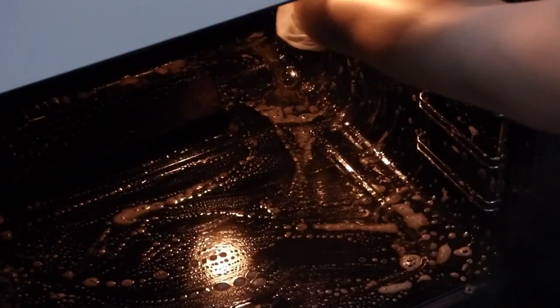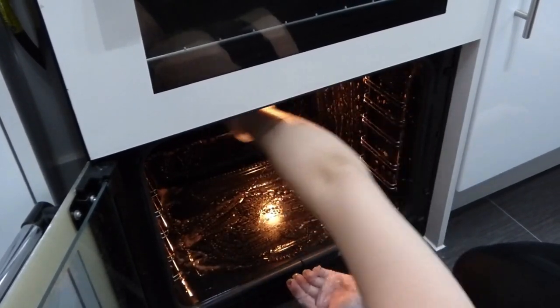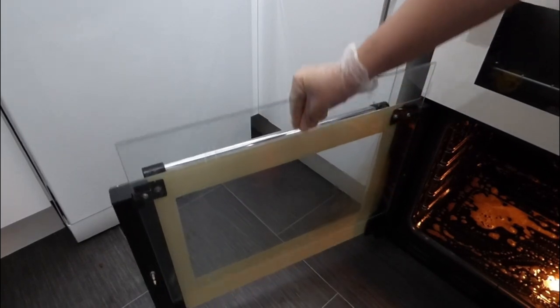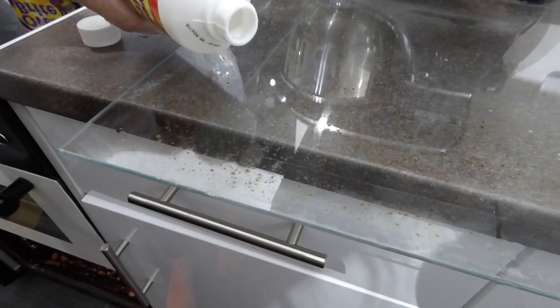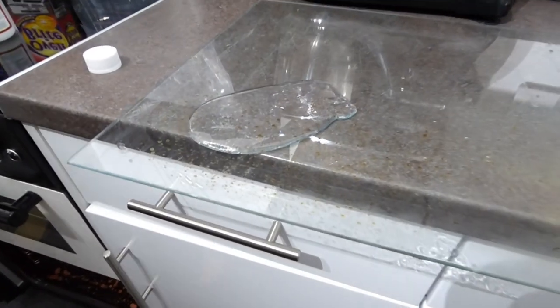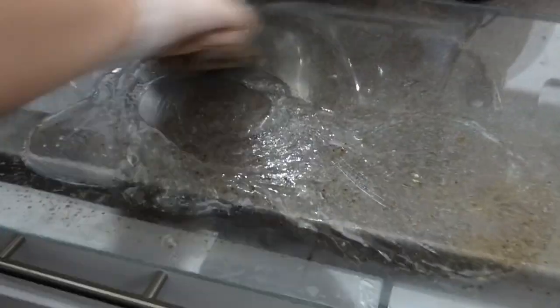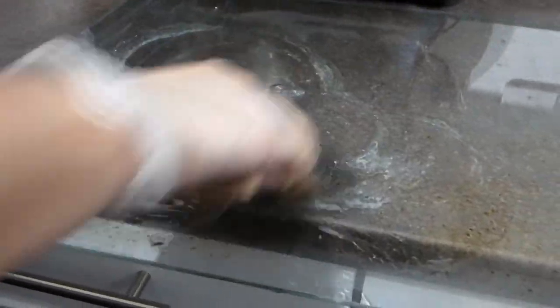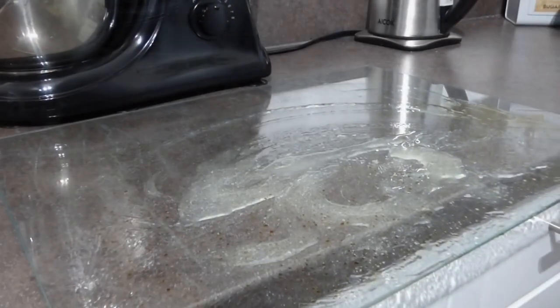As you can see here already, the solution starts working, but you do want to leave this overnight. This just makes cleaning the oven easy like Sunday morning. Let's move on to the glass panels. Again, we are going to put the solution on these. There are lots of grease and grime on my glass panels, so I want to make sure that these are done really well. I am literally just rubbing in the solution, making sure that the whole of the glass panel is going to be clean.